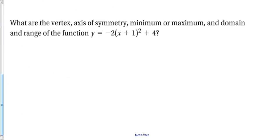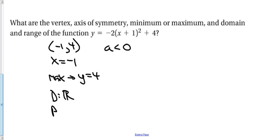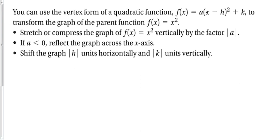For the second example: the vertex is (−1, 4). The axis of symmetry is x = −1. Since a is negative, a < 0, there is a maximum value. The maximum is y = 4. The domain is all real numbers, and the range is y ≤ 4.